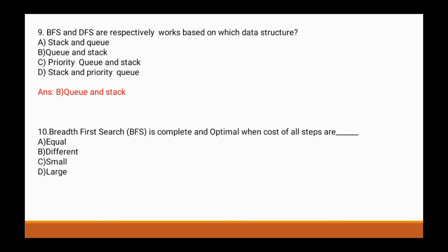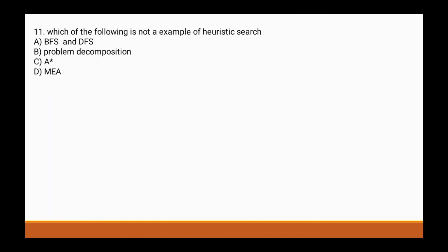Question 10: Breadth-first search is complete and optimal when the cost of all steps are dash. Options are: a) equal, b) different, c) small, d) large. The correct answer is a) equal.